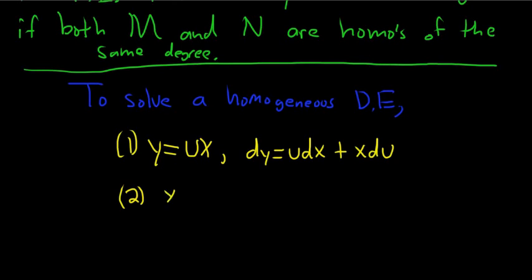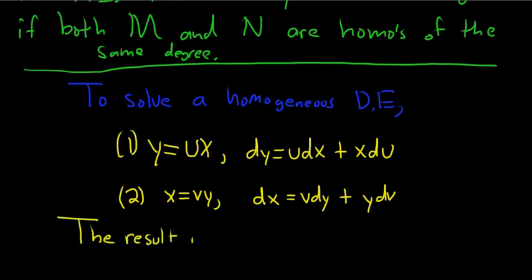Another choice is to let x equals vy. When you do this, you end up with dx equals vdy plus ydv. So you have two choices. I personally like to use the first choice, but you use whichever choice is simpler. After you do this, the result is linear. You can use either choice, but you want to use the one that's easiest.